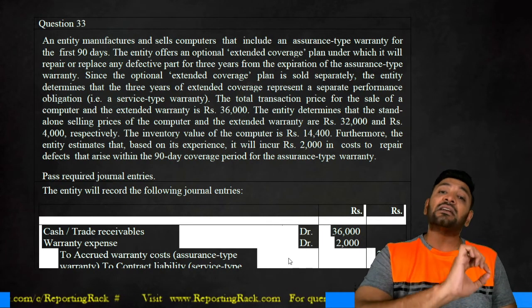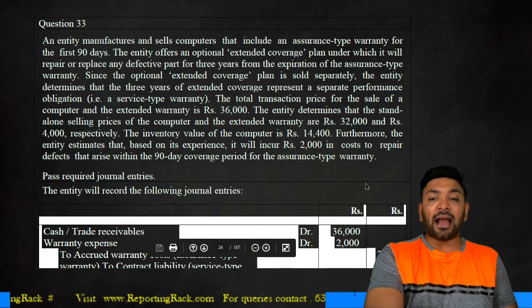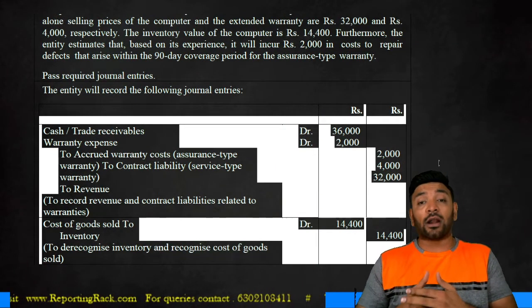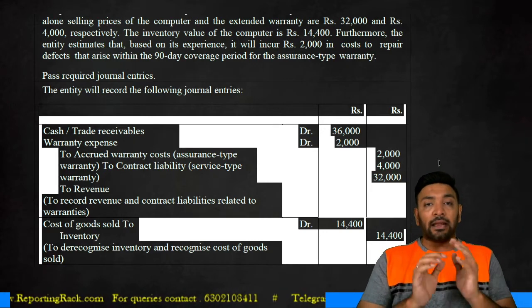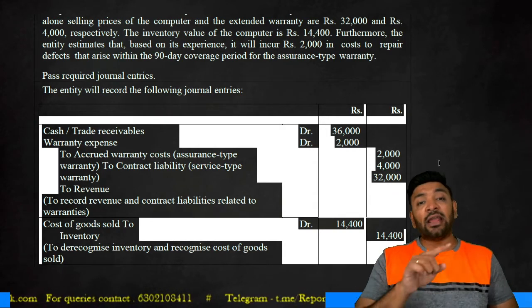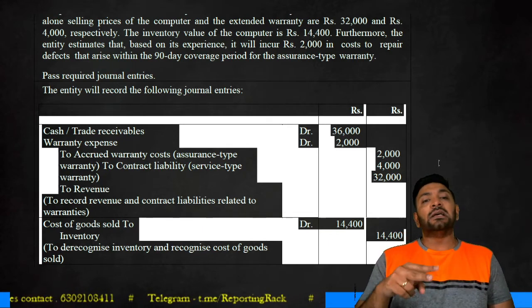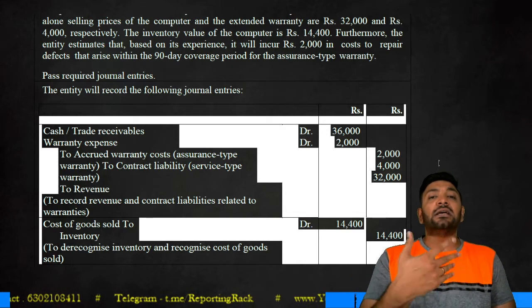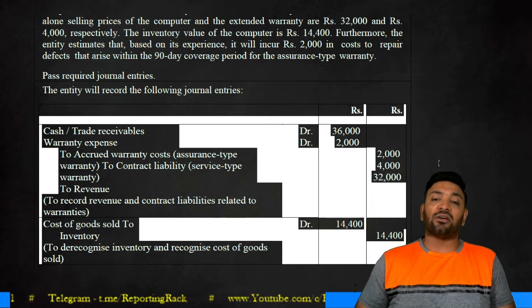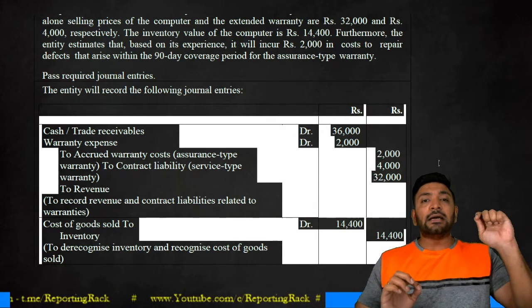The revenue from extended coverage will be deferred and recognized over the entire three-year coverage period. Looking at the entry as presented: bank account debit 36,000, warranty expense account debit 2,000; to accrued warranty cost 2,000, to contract liability 4,000 — deferring the 4,000 rupees for extended warranty recognition over three years — and to revenue 32,000 immediately. A second entry records cost of goods sold debited against inventory to the extent of the computer's inventory cost of 14,400.